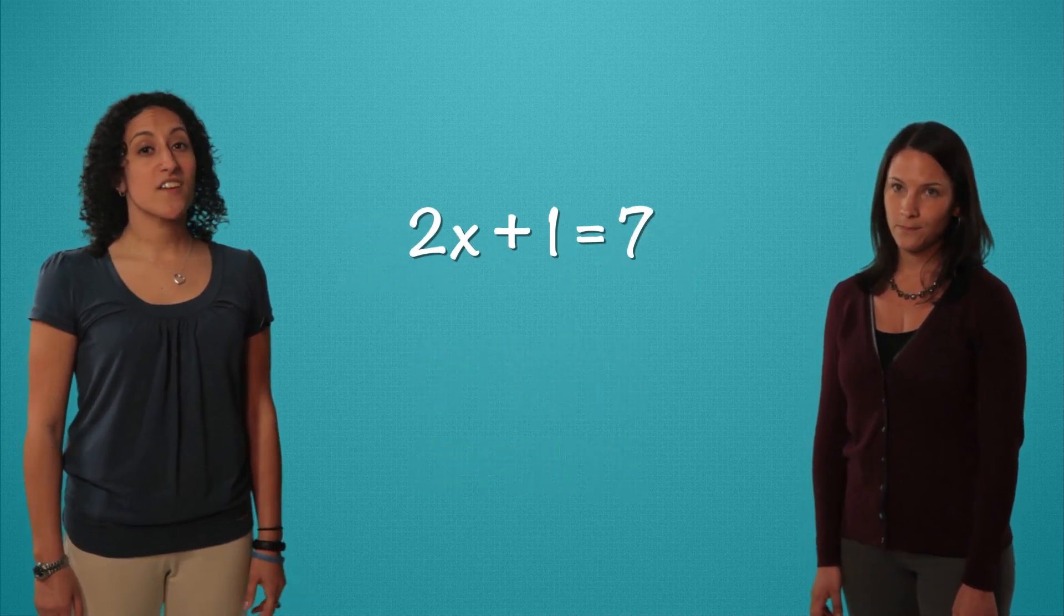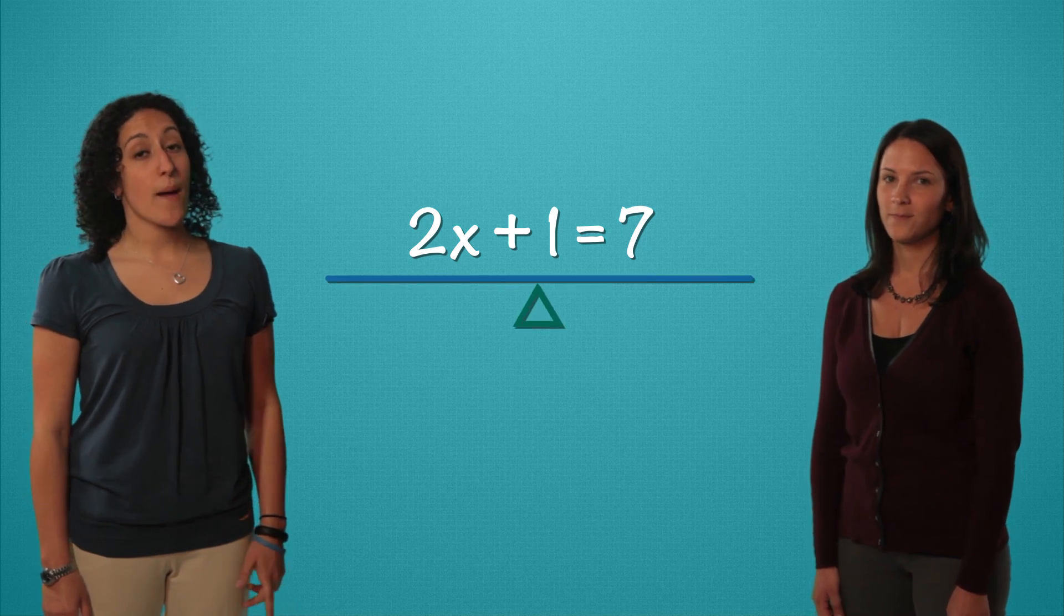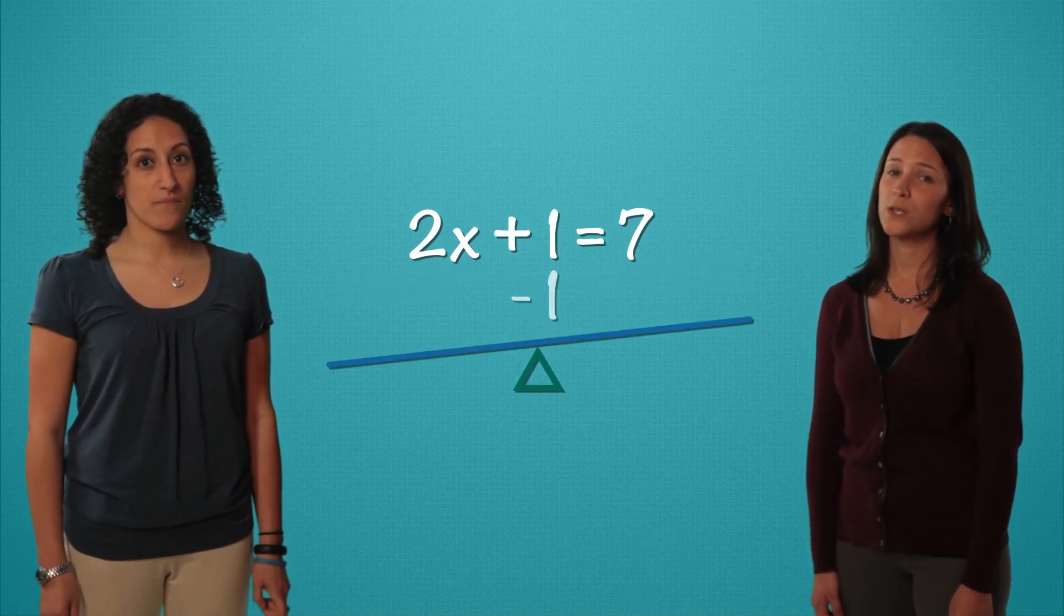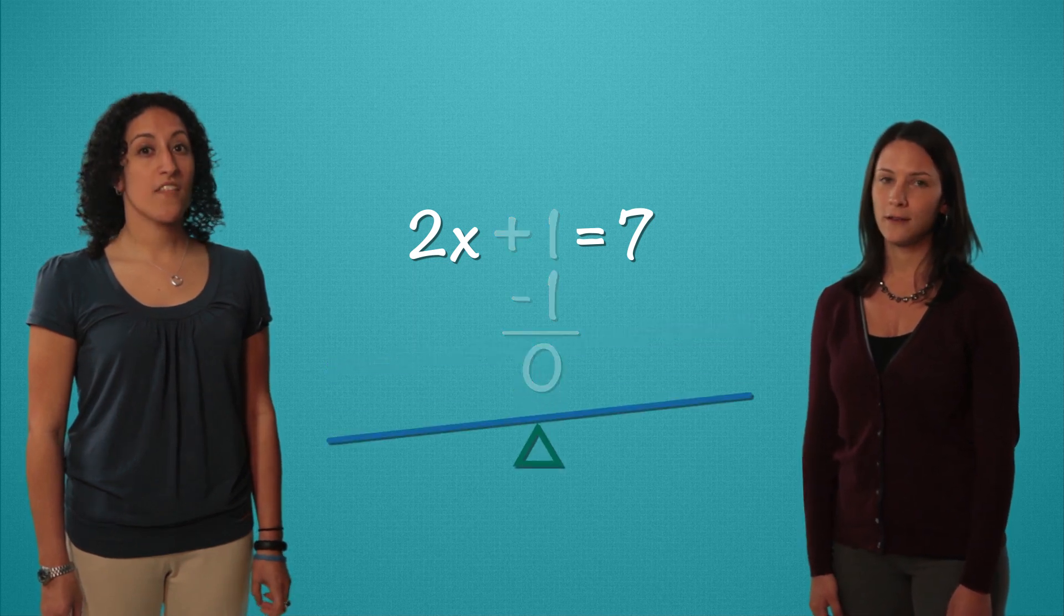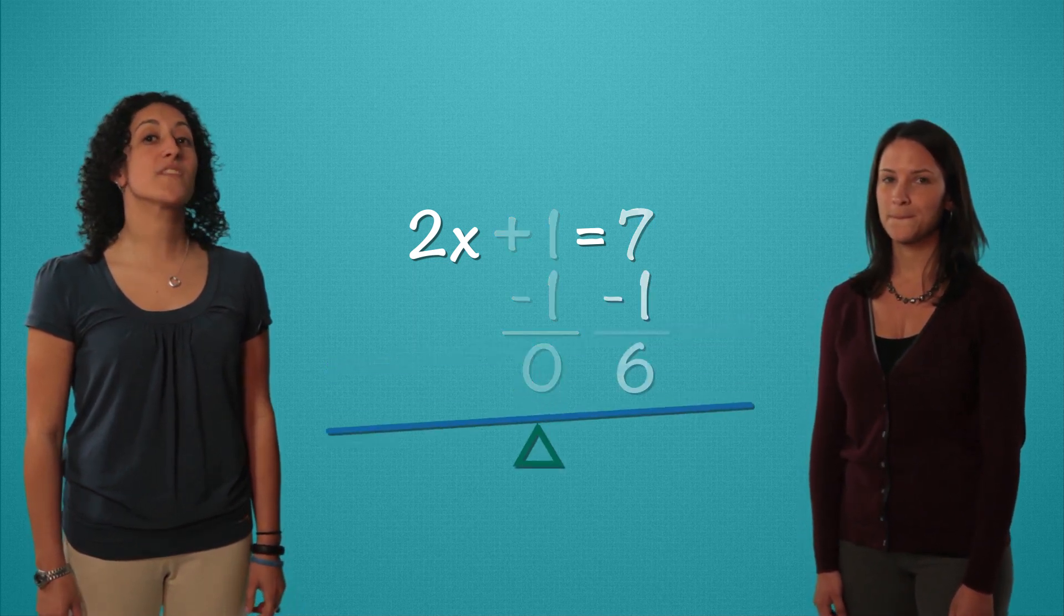But remember this equal sign is a balance. Whatever happens to one side has to happen to the other. So we subtract 1 from this side and we get 0. We're left with 2x. On this side we subtract 1 and we're left with 6.